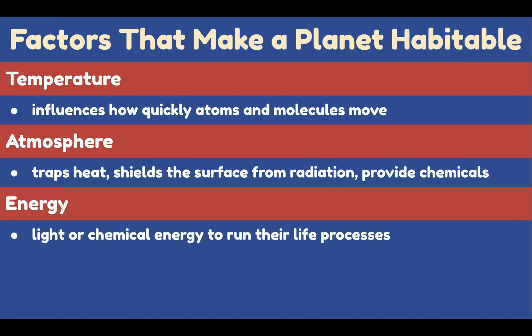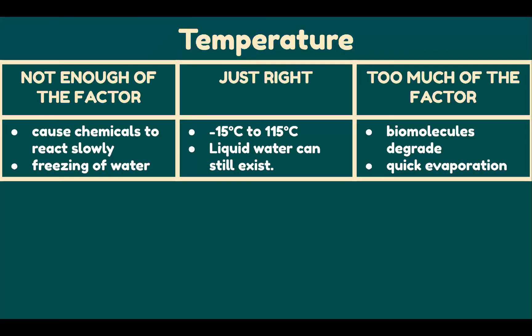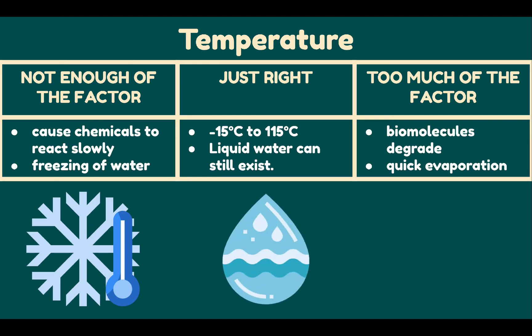Third is energy, which organisms need to use — light or chemical energy — to run their life processes. Fourth is nutrients, which are used to build and maintain an organism's body. Regarding temperature: too little — or low temperatures — causes chemicals to react slowly, interfering with the reactions necessary for life. It can also cause freezing of water, making liquid water unavailable. Liquid water is one of the most important prerequisites for life. Life seems to be limited to a temperature range of −15°C to 115°C, within which liquid water can still exist under certain conditions.